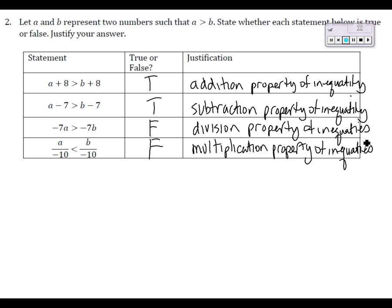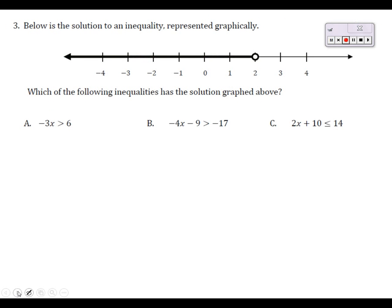Problem three involves more inequalities, but this time a solution is given on a number line — a graphical representation of a solution to either a, b, or c. When doing a multiple choice problem my thinking process is slightly different. I look at this solution and see an open circle, so I can immediately eliminate choice C.